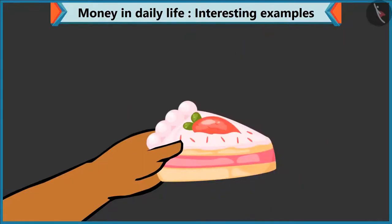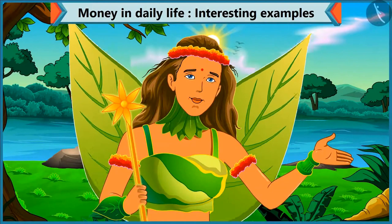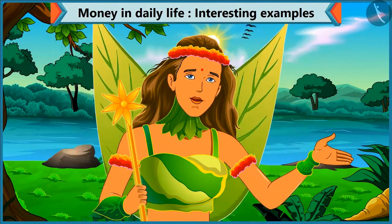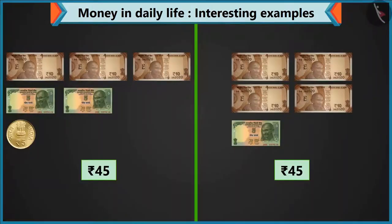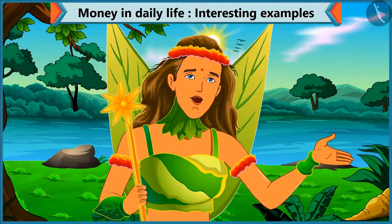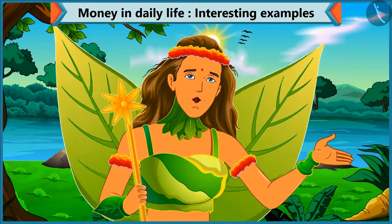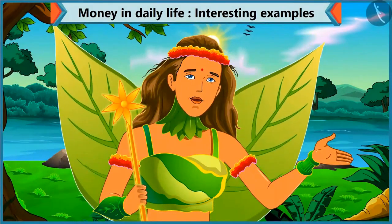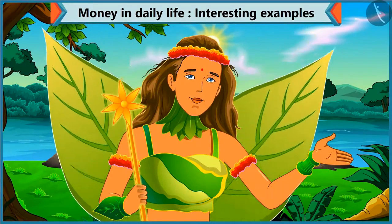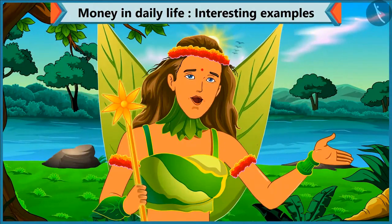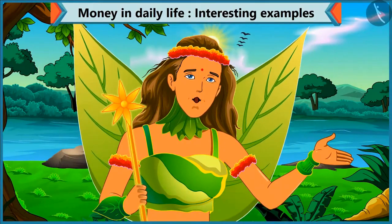Here is your pastry. Thank you. So children, you saw how we made 45 rupees in 2 different ways. You can also think of other ways. Let's see what Chichi is doing next.